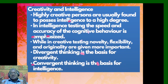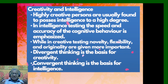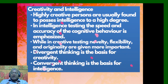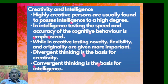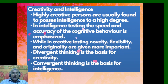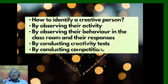What is the connection between creativity and intelligence? Highly creative persons are usually found to possess intelligence to a high degree. In intelligence testing, speed and accuracy of cognitive behaviour are emphasised, while in creative testing, novelty, flexibility, and originality are more important. Divergent thinking is the basis for creativity, whereas convergent thinking is the basis for intelligence.